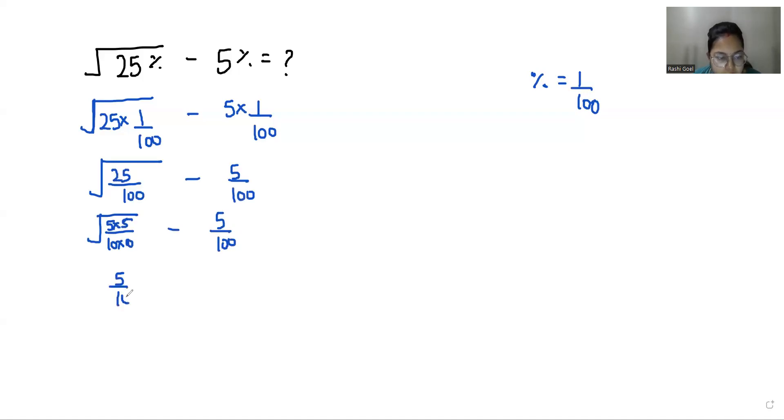So it becomes 5 by 10 minus 5 by 100. To make the denominator same, I am going to multiply with 10 in numerator and denominator. So it becomes 50 by 100 minus 5 by 100.